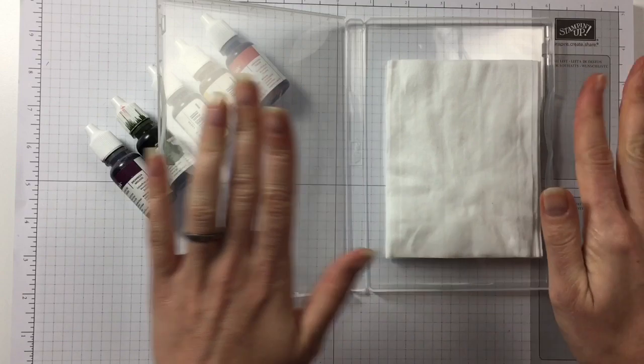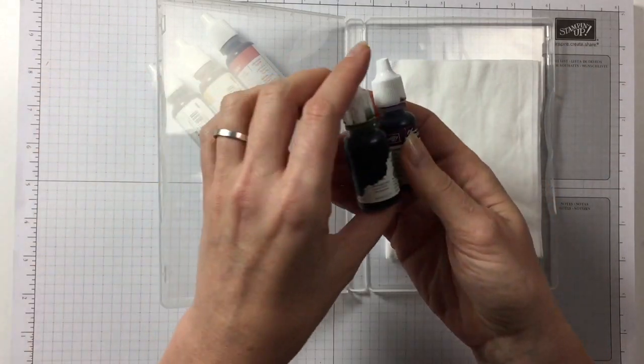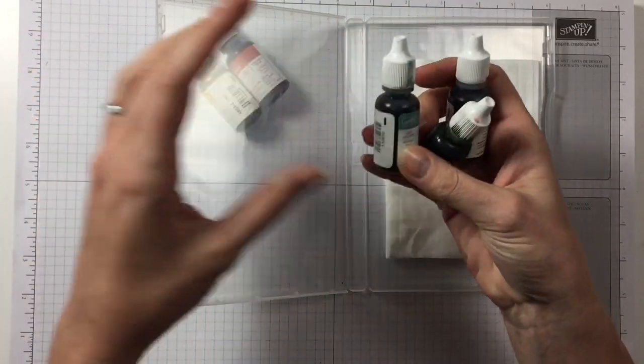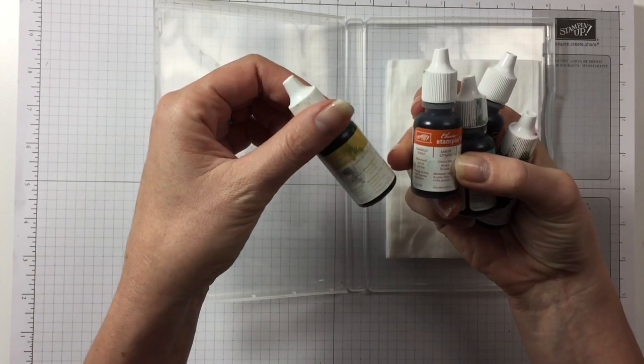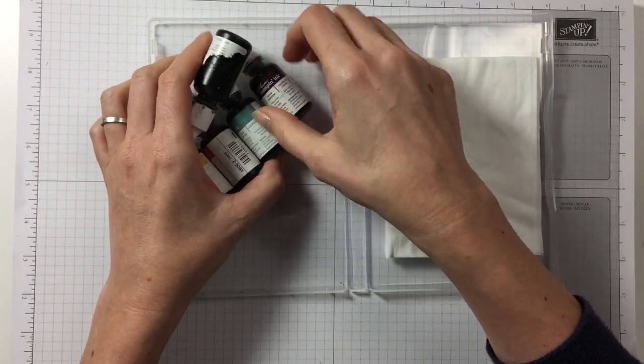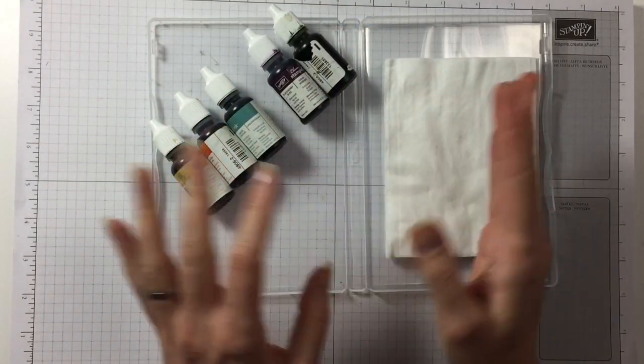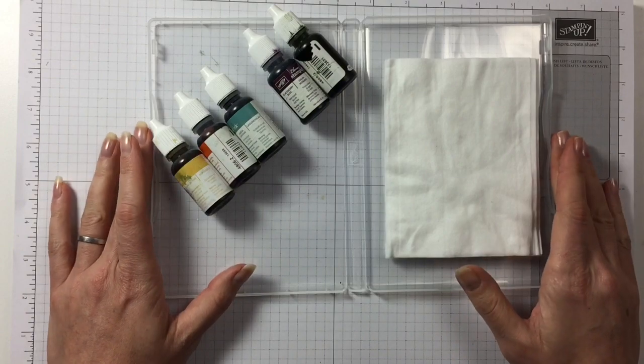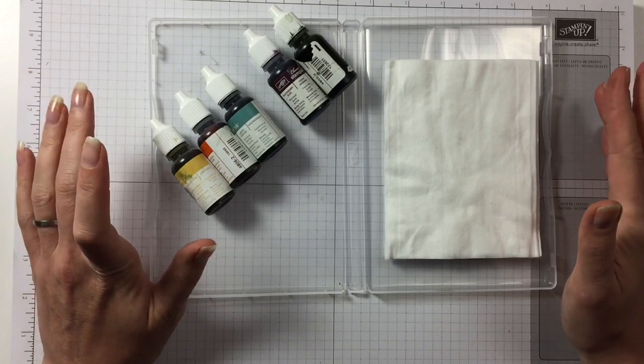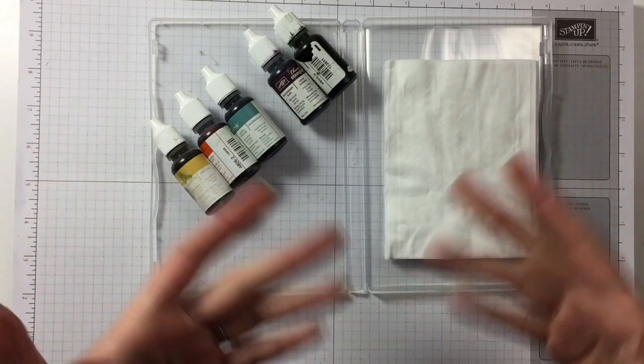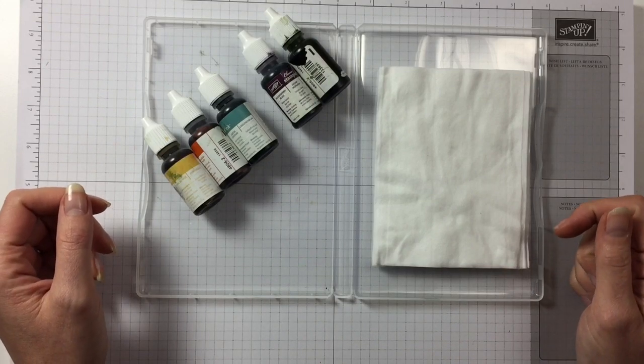I'm using the In Colors: Blackberry Bliss, Mossy Meadow, Lost Lagoon, Tangelo Twist, and Hello Honey. I've chosen these colors for my projects that I'm doing for the 12 Days of Christmas, so this video is part of that. But I just thought I would show you how I do this because there's so much going on in the videos, so I thought I'd do an extra one.